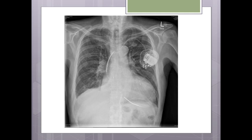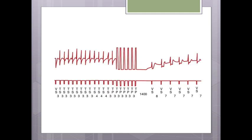An ICD from our hospital is shown. The lower ECG trace shows a rapid, irregular, narrow-complex tachycardia. The device senses it and decides to deliver a shock, which is shown in the middle trace, converting the rhythm back to sinus rhythm or a slower heart rate.